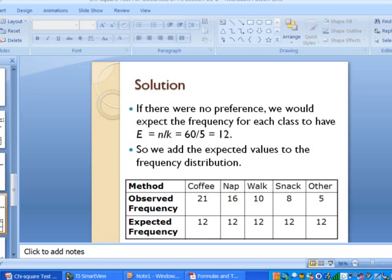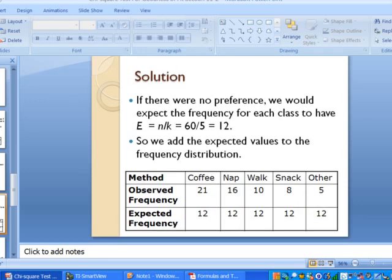So in this case, we said we had 60 sample points, and then we had five classes, 1, 2, 3, 4, 5, and so we divide 60 by 5 and we get 12. So if the distribution is equal for each class, then that means that each of these classes should have an expected frequency of 12.